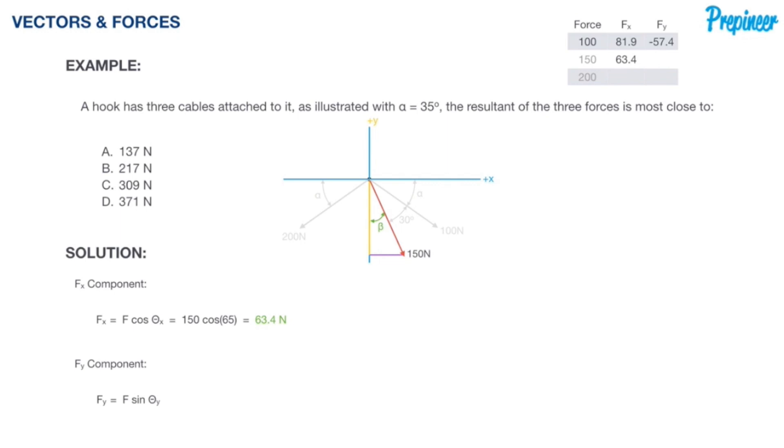Actually that formula right there is incorrect, it should be f cosine theta y because theta y is beta, and if beta is theta y then that's the adjacent side, which means we're going to use the cosine which is adjacent over hypotenuse. Let's find beta. We know this is a right triangle, this is 90 degrees right here. We know from the force 150 back to the x axis it's 65 degrees, so beta is 90 minus 65 which equals 25 degrees.